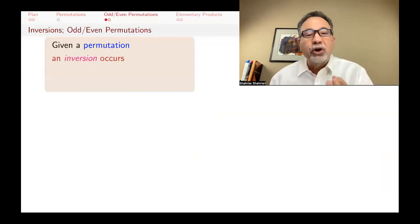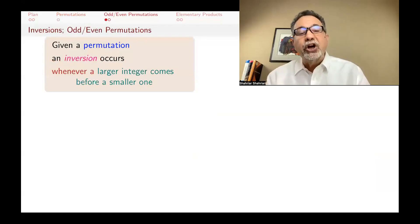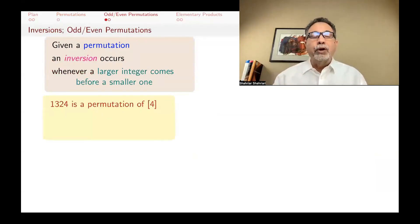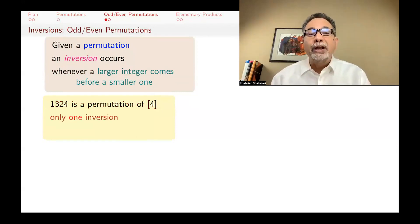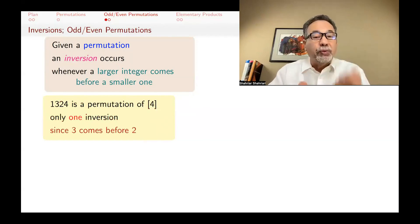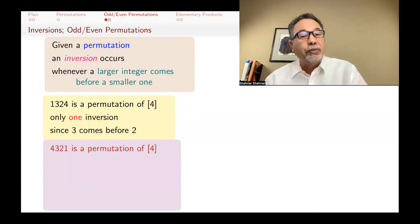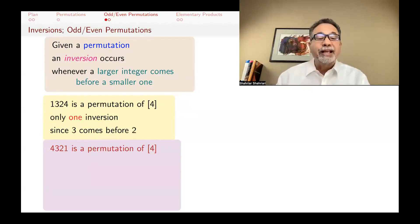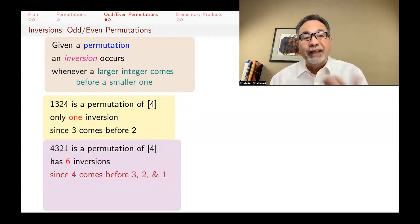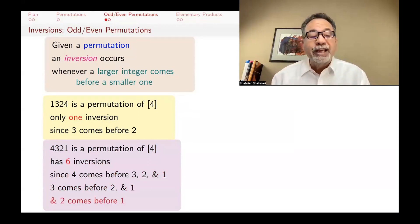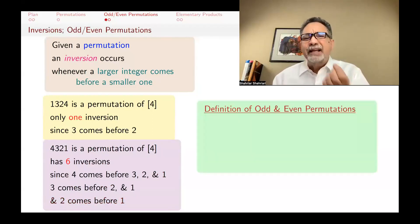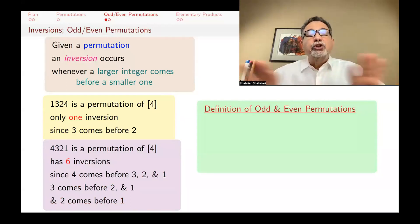Given a permutation, we have something called an inversion. An inversion occurs whenever a larger integer comes before a smaller one. For example, (1,3,2,4) is a permutation of four elements and has only one inversion: three coming before two. On the other hand, (4,3,2,1) has six inversions — four comes before three, two, and one (three inversions); three comes before two and one (two more); and two comes before one (one more): 1+2+3 = 6 inversions.